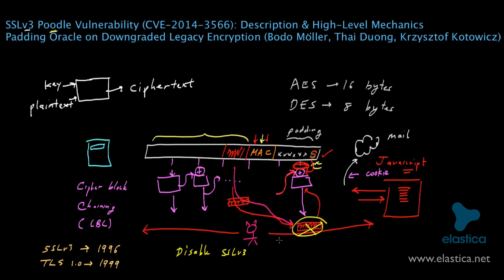POODLE, the name given to this attack, stands for Padding Oracle On Downgraded Legacy Encryption. The name comes from: first, taking advantage of how padding is done in SSL v3; second, the term 'oracle' refers to the idea that the server is queried multiple times and its responses — whether it accepts or rejects what was sent — are used as information; and third, 'downgraded legacy encryption' refers to tricking the two parties to downgrade their version to SSL v3. This attack has a CVE value of 2014-3566, and it was discovered by Bodo Möller, Thai Duong, and Krzysztof Kotowicz.